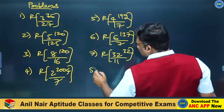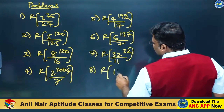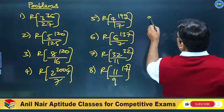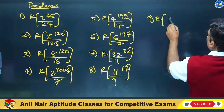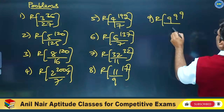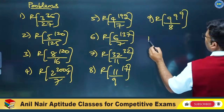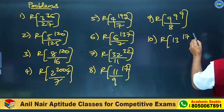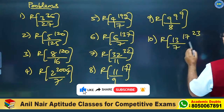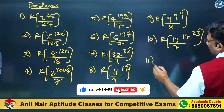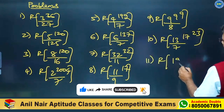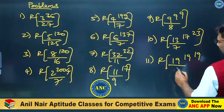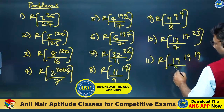Further problems: 11 power 17 divided by 9, 9 power 9 power 9 divided by 8, 13 power 17 power 23 divided by 7, 11, 19 power 19 power 19 divided by 8.